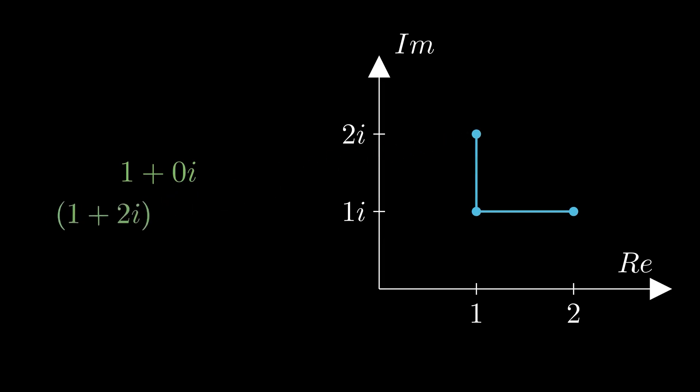We can calculate 1 plus 2i minus 1 plus 1i. And here, we end up with 1i, giving the complex vector 0 plus 1i.